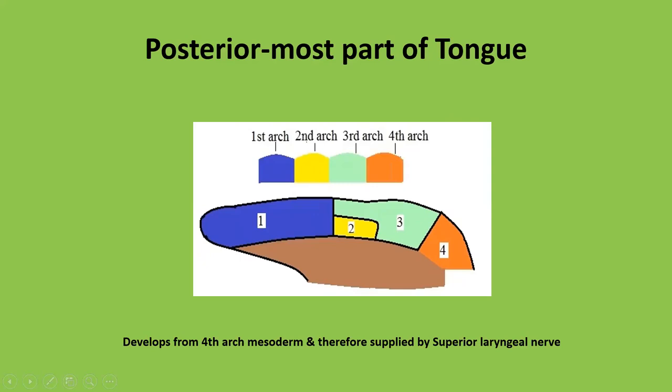The posteriormost part of the tongue develops from the fourth arch mesoderm, shown in orange color here. Therefore it is supplied by the nerve of the fourth arch, the superior laryngeal nerve. Specifically, the internal laryngeal nerve — a branch of the superior laryngeal nerve — supplies the posteriormost part of the tongue.